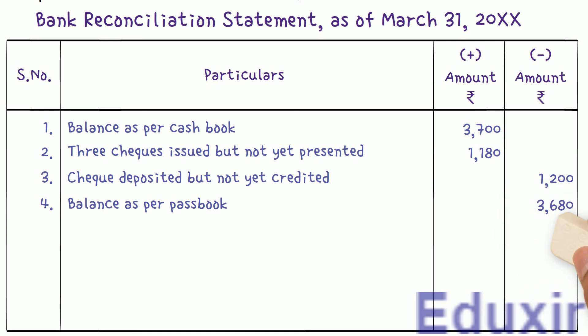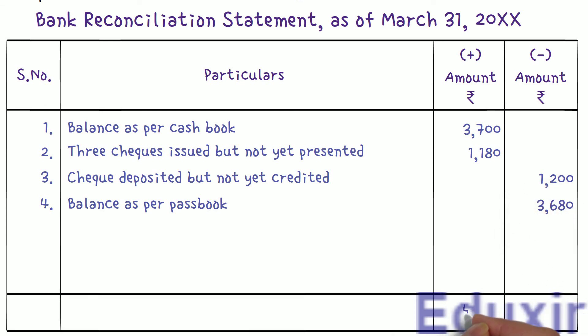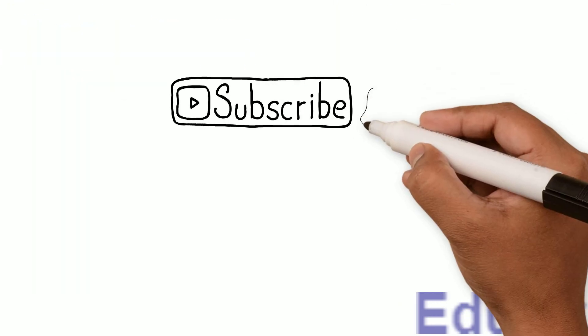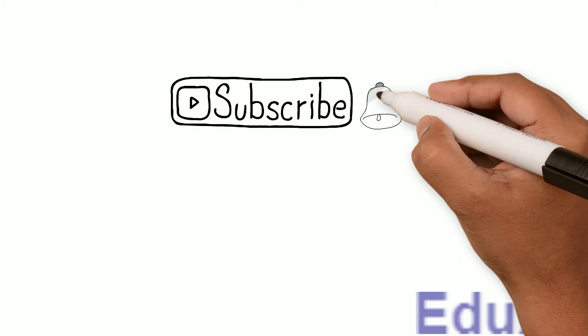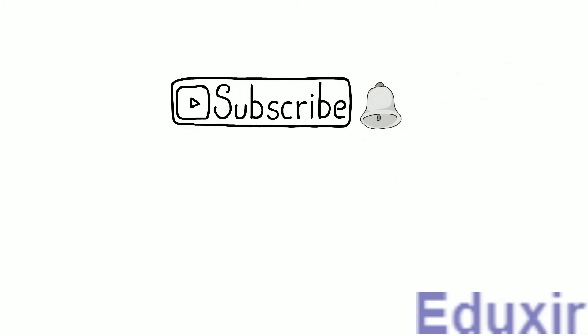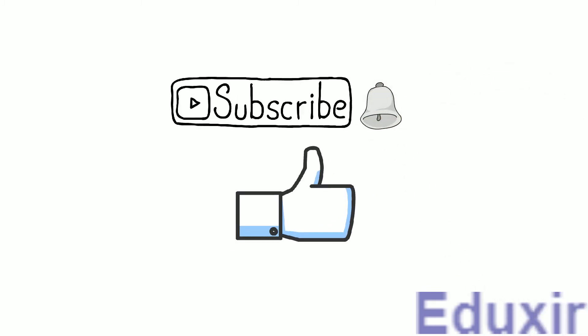The total of all entries in the plus amount column is 4880 rupees. Similarly, the total of all entries in the minus amount column is also 4880 rupees. Edixit.com has started to promote effective and efficient learning to help students with their learning requirements. To watch all our videos, please subscribe to our channel, click the bell icon for notifications, and click the like button if you enjoyed this video. Thanks for watching.